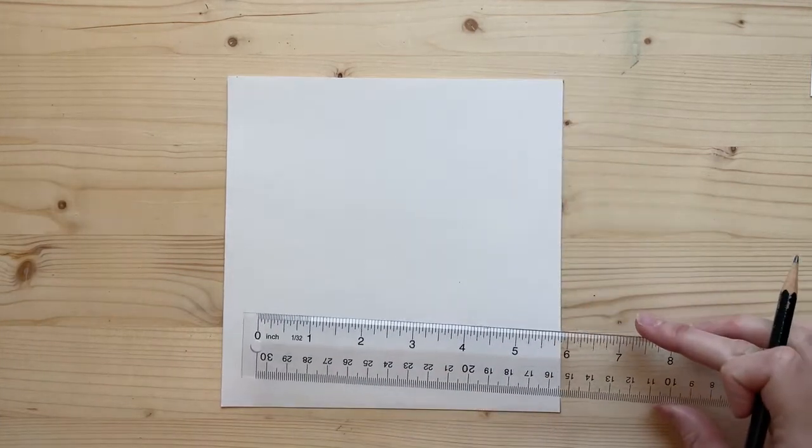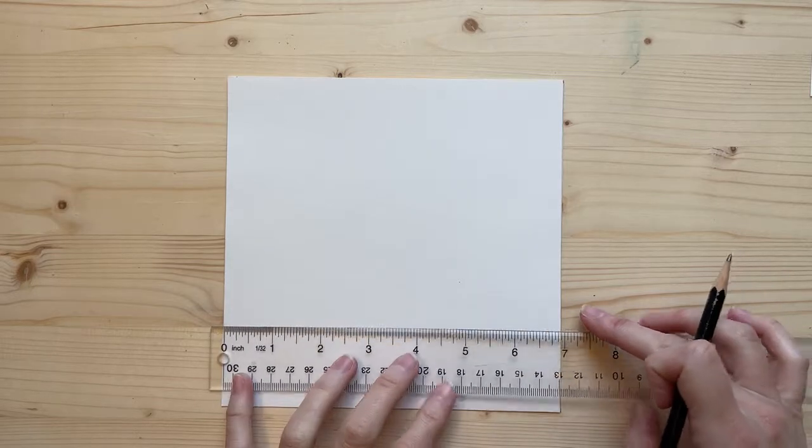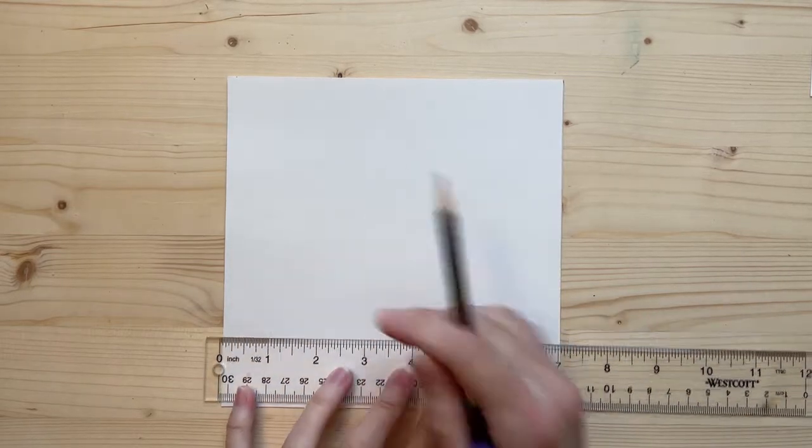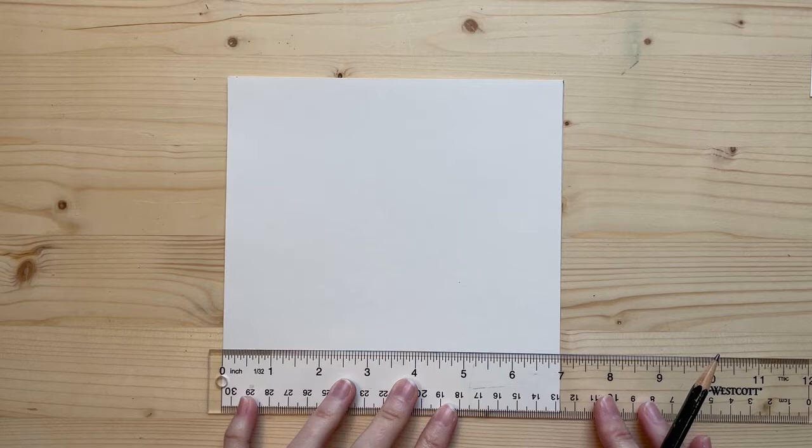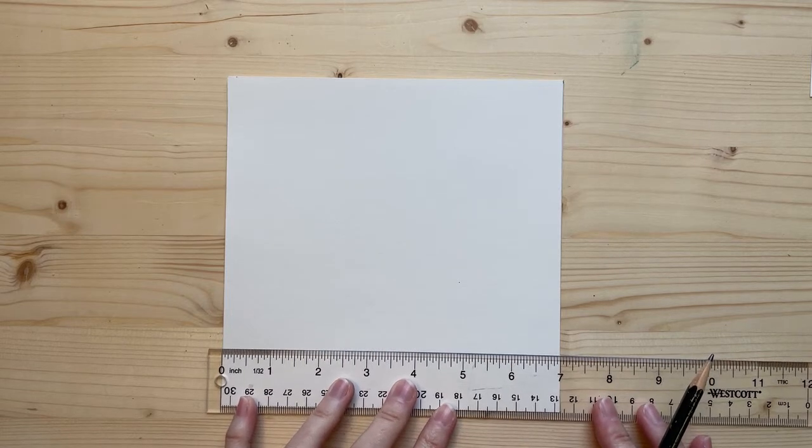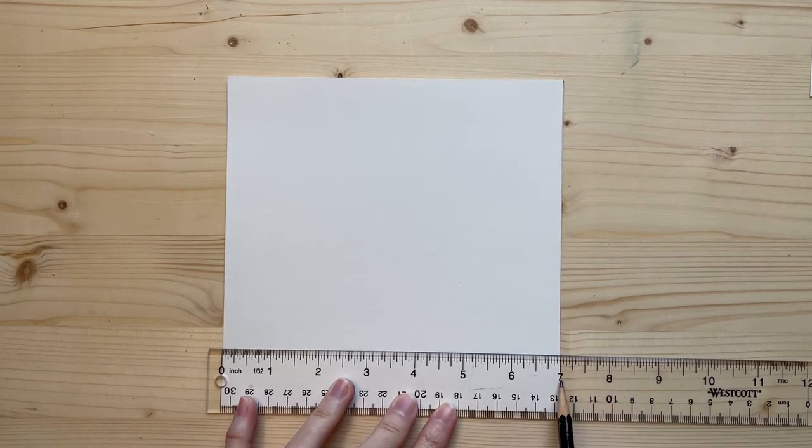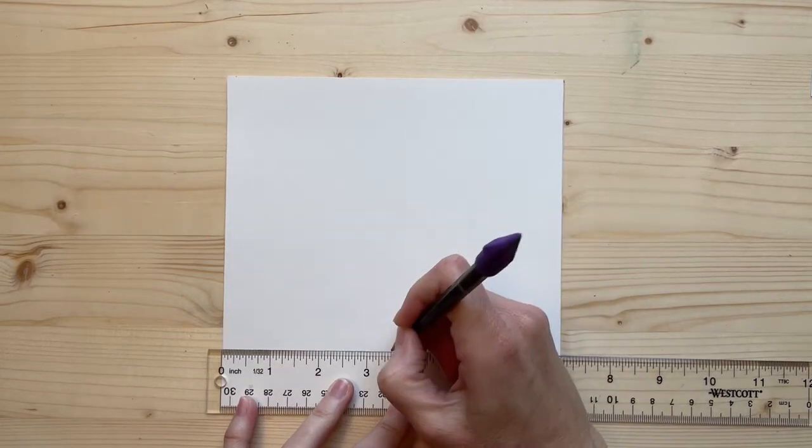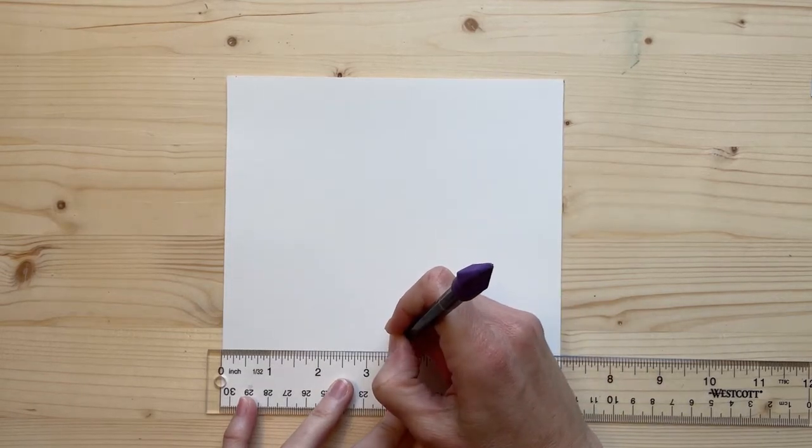I'm going to line my ruler up with zero at the edge of my paper and put a mark at the halfway point. Half of seven would be three and a half inches. I'll put a mark right there.